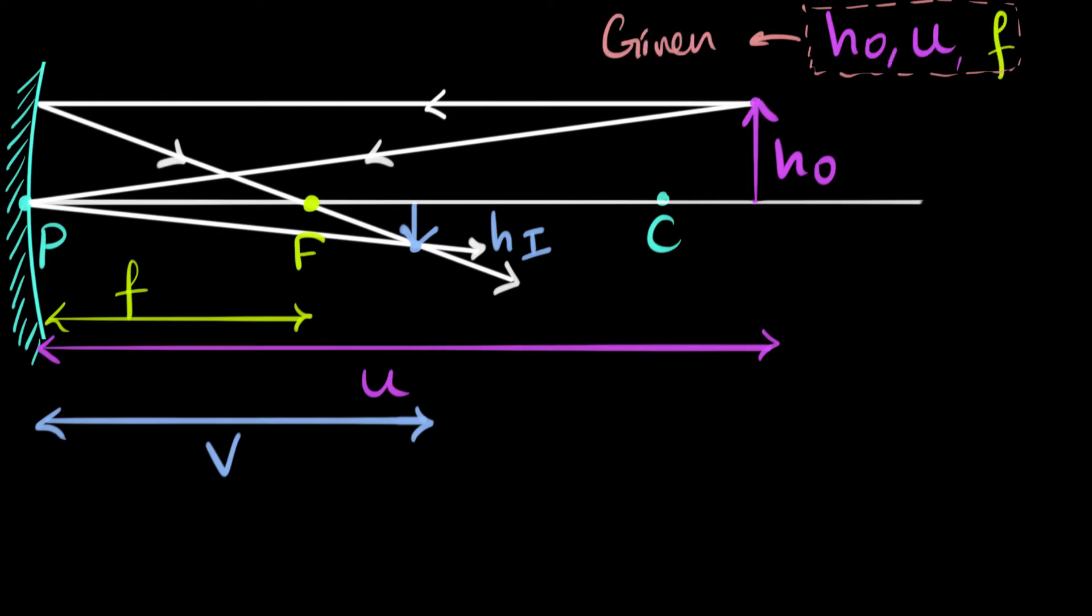Given these, we need to figure out the image distance and the image height. So we need to find out what V is and what HI is.